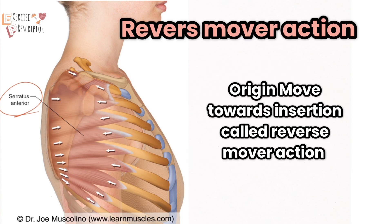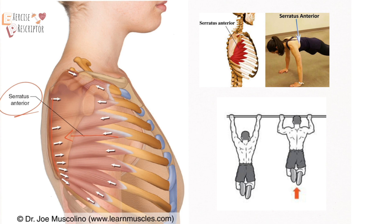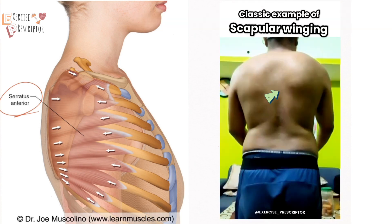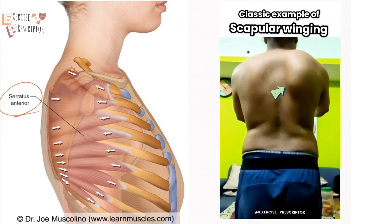When the origin moves towards a fixed insertion, that is called reverse mover action. This occurs during push-ups and pull-ups. Now we will look into the isometric stabilization function of the serratus anterior — it stabilizes the rib and scapula.